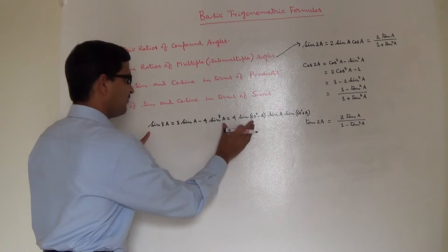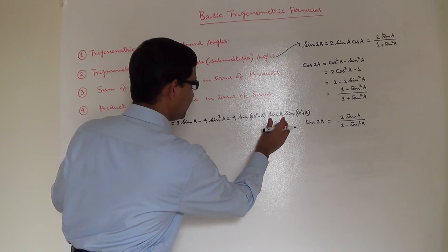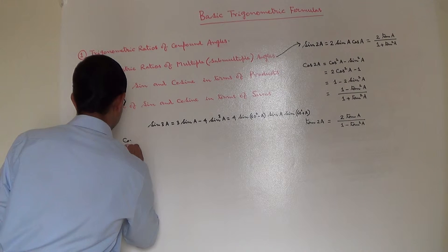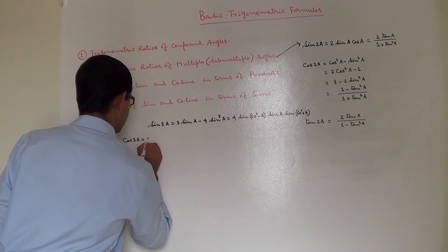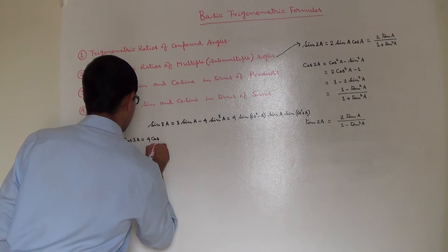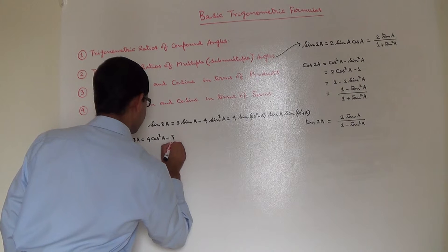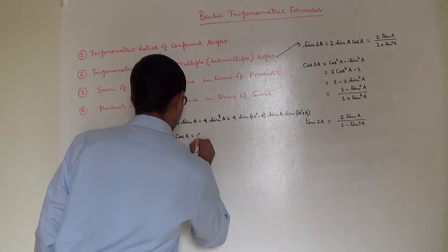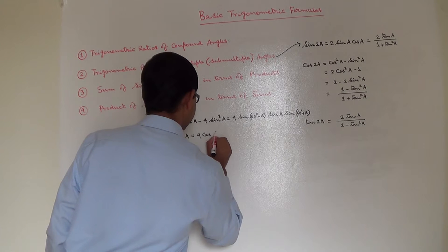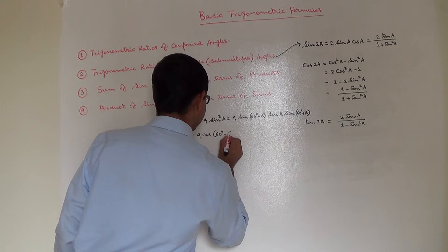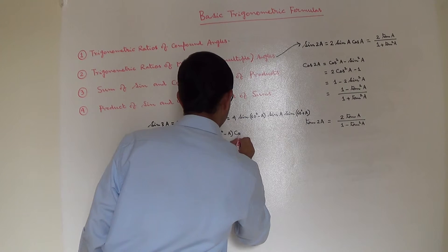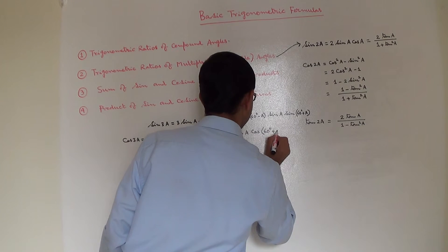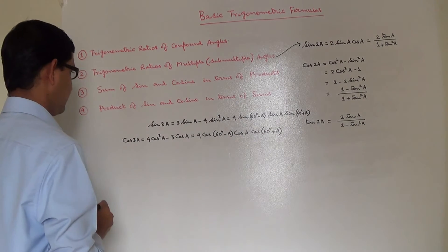Then cos 3A is equal to 4 cos cube A minus 3 cos A. That is equal to 4 cos of 60 degrees minus A into cos A into cos of 60 degrees plus A.